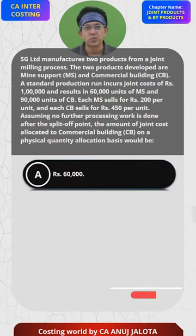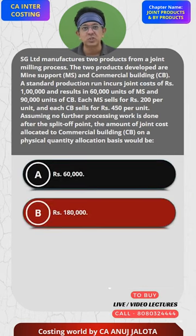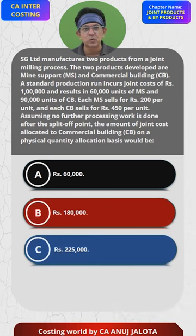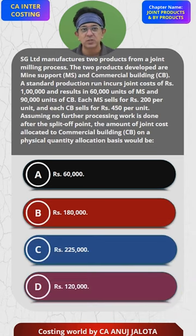The four options are: A) 60,000, B) 1,80,000, C) 2,25,000, and D) 1,20,000.